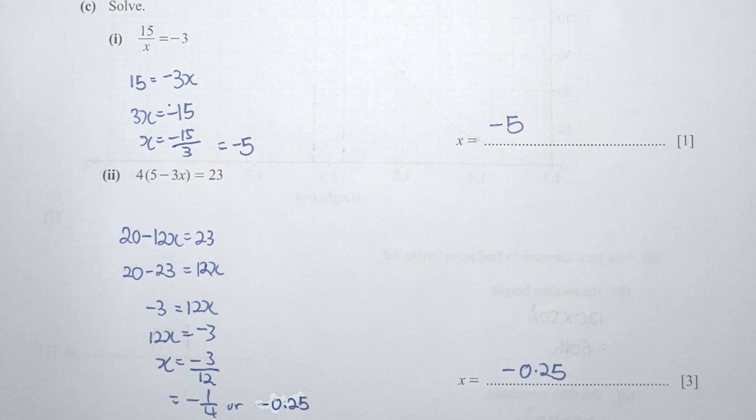For part C, I cross-multiplied to get negative 3X equals 15, so 3X equals negative 15. Therefore X equals negative 15 divided by 3, giving a final answer of negative 5.